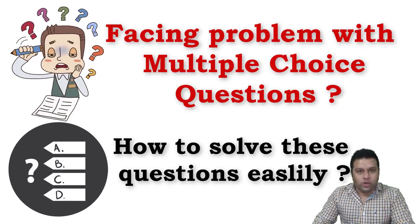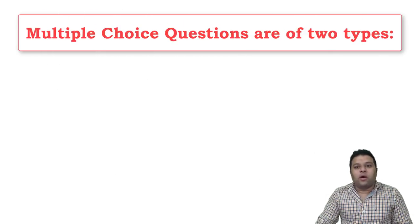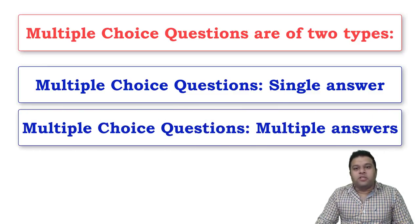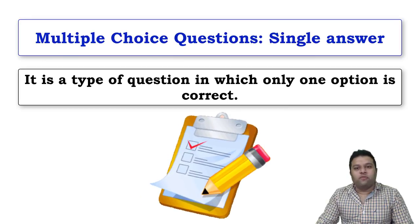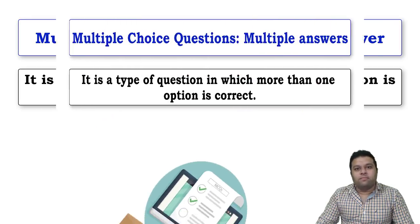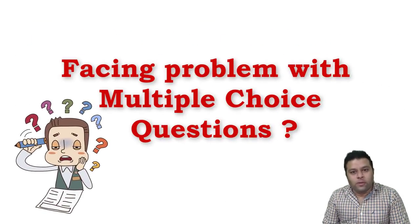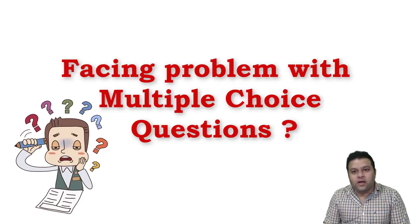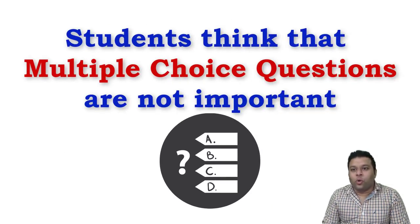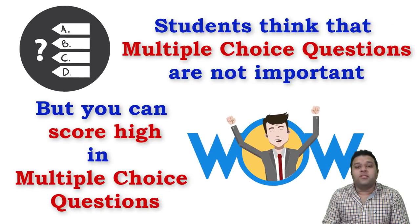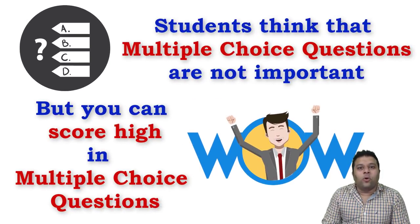Multiple choice questions are of two types: multiple choice question single answer, and multiple choice question multiple answer. Single answer is the type where you choose one answer, and multiple answer is the type where more than one answer is correct. A lot of us think MCQs are not important and just mark any answer, but you can score maximum marks in these questions as well.